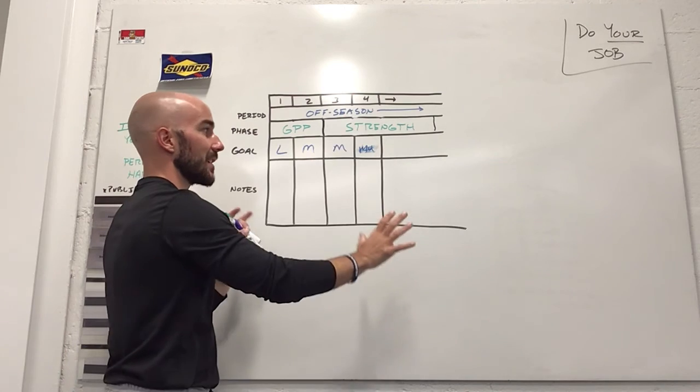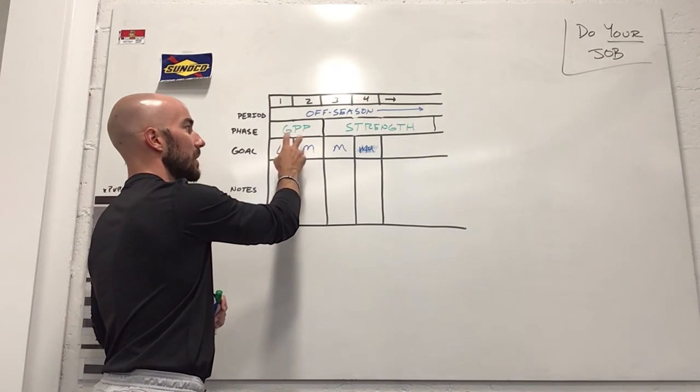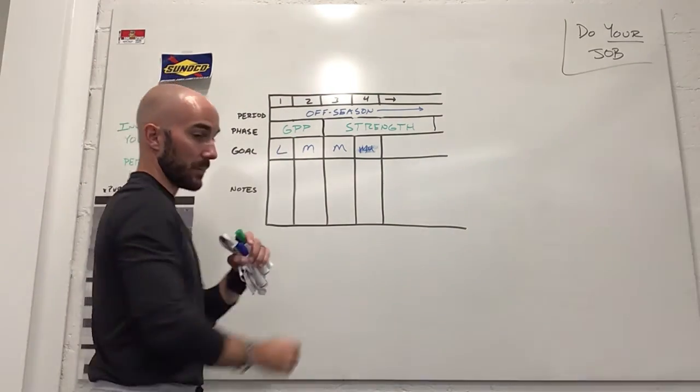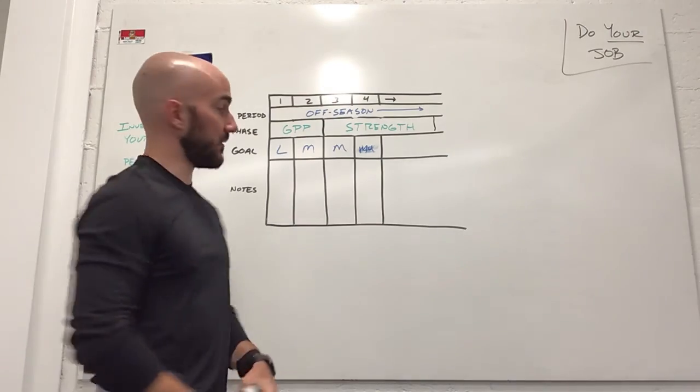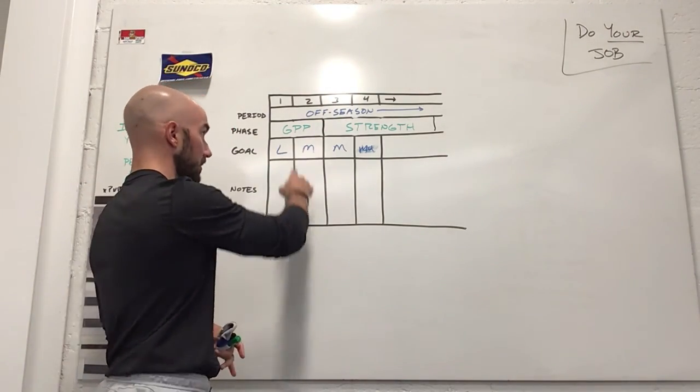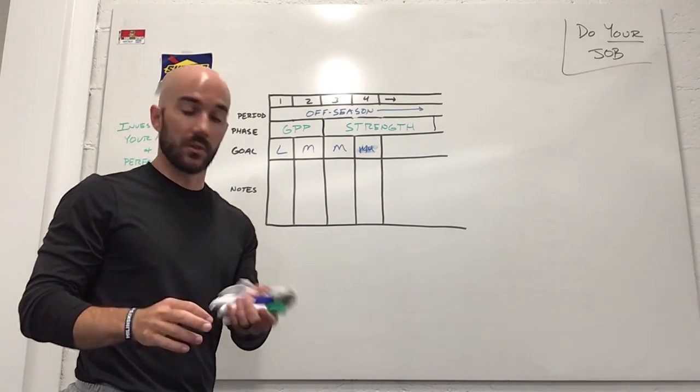And then finally, within this exercise, we're looking within this GPP block, what is the loading going to be like on each one of those weeks? Is it going to be low, medium, high? If you're working on Microsoft Excel, this is really easy to merge in center cells. You can color code these with conditional formatting. It makes the visual really good.